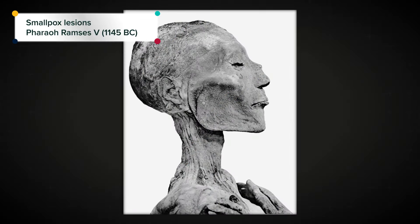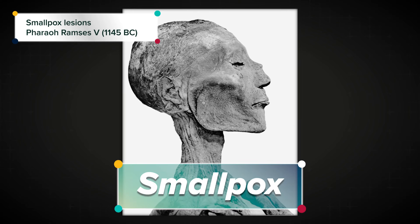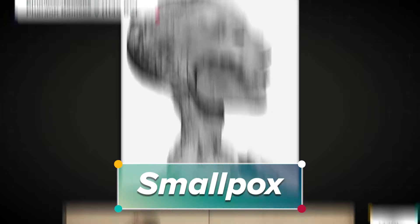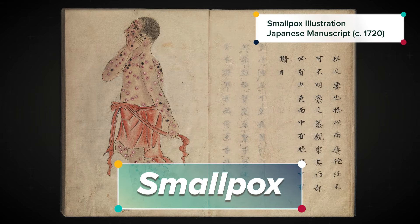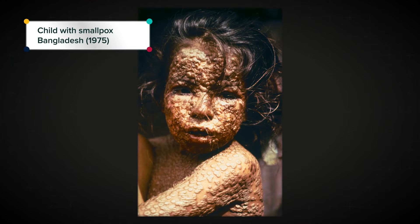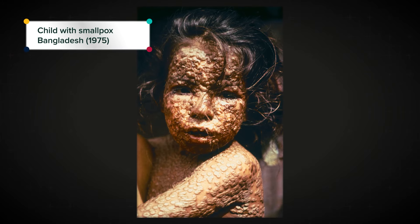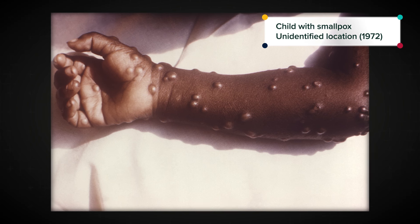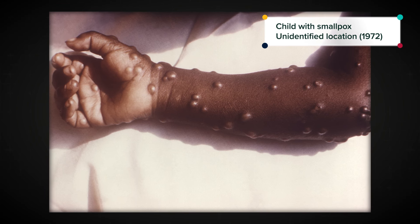One particularly dangerous communicable disease was smallpox. Scientists have found smallpox-like rashes on Egyptian mummies, suggesting that humans have been dealing with some form of smallpox for over 3,000 years. And in the 20th century, smallpox was still a major threat. Historically, experts estimate that smallpox killed more than 300 million people since 1900 alone. So in 1959, the WHO added a bold new mission to its vision board — eradicate smallpox.